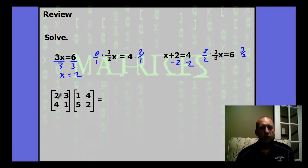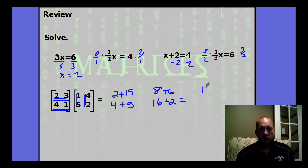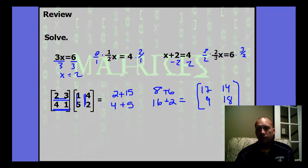I also want to review multiplying matrices. We do row by column, so that's going to be 2 plus 15. Then row by second column: 8 plus 6. The second row by first column: 4 plus 5. And then the second row by second column: 16 plus 2. So the result here is 17, 14, 9, and 18 — that would be the resulting matrix. Do you know the pattern of how to multiply matrices? It's a confusing one until you get the hang of it.